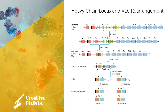Early during B lymphocyte development, rearrangement of one of the D gene segments to one of the J segments takes place, regulated by the recombination-activating genes RAG1 and RAG2. Subsequently, rearrangement of one of the V gene segments to the DJ segment occurs. The primary RNA transcript is then processed by splicing the VDJ segment to a constant region gene segment. Based on different constant chains, mRNA is translated to different heavy chains forming antibodies of various isotypes.